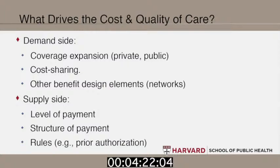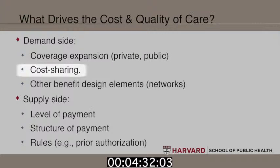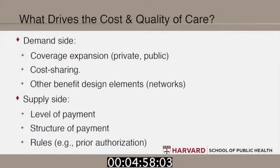To put some logic around this, going back to the notion of demand and supply, these are the two major levers that policymakers can pull. On the demand side, policymakers could expand coverage — which, of course, will increase the demand for health care — and then balance that with cost sharing. For example, higher out-of-pocket payments for emergency department use might get consumers to trade off in ways that reduced emergency department use and increased primary care. The managed care revolution was really about changing the shape of health care delivery by forming networks of providers and encouraging coordination among them.